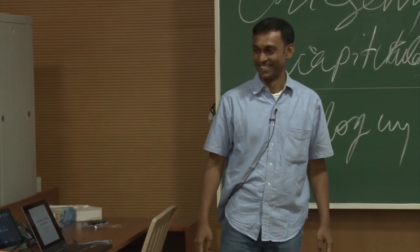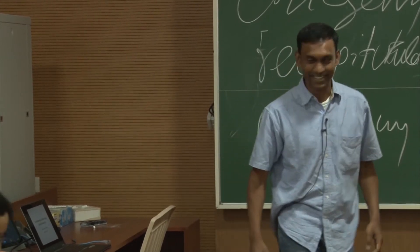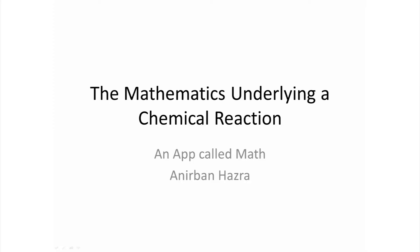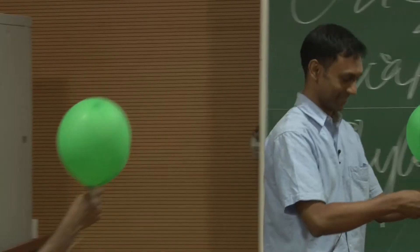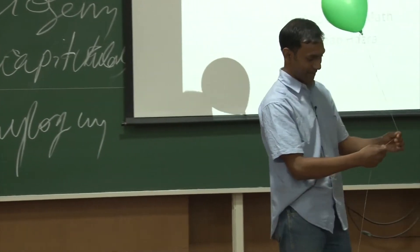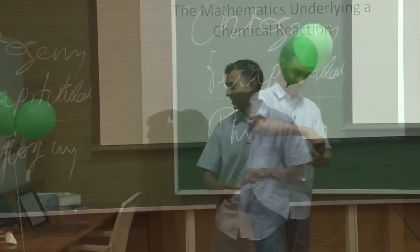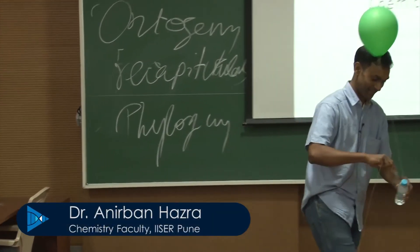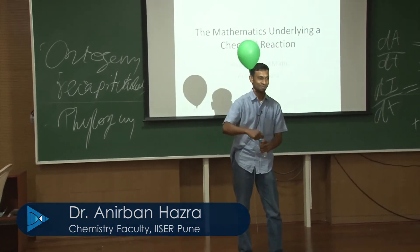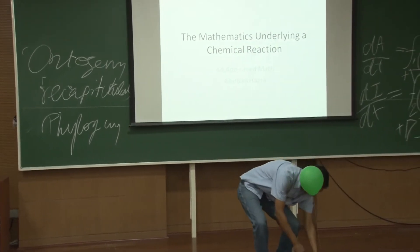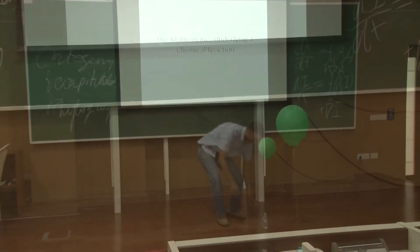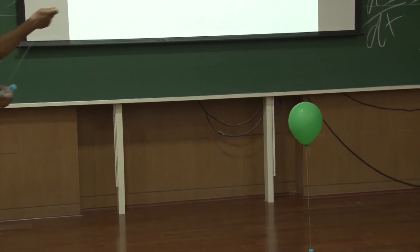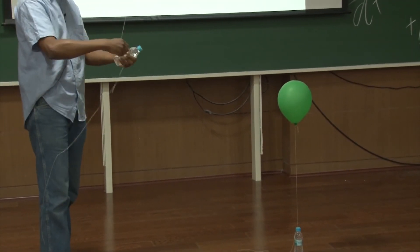Mathematics Underlying a Chemical Reaction. I am going to talk about the Mathematics Underlying a Chemical Reaction. What we are going to do is, when you think chemistry, you think of a reaction. We will do a reaction first, then we will talk about the mathematics underlying it, and we will do a fairly dramatic reaction.